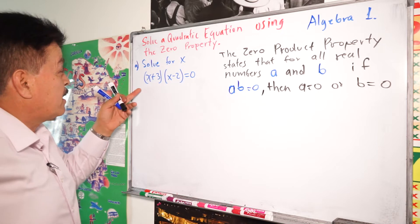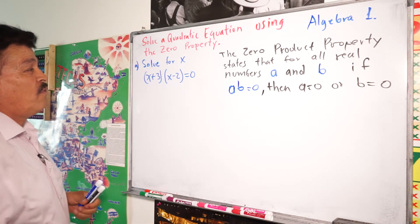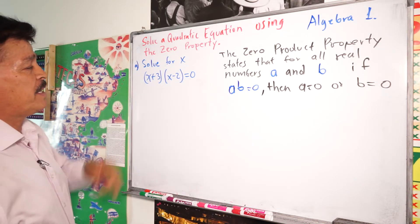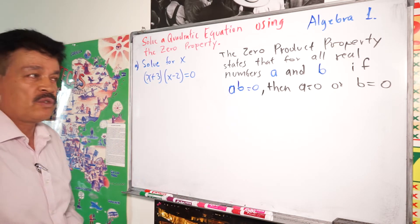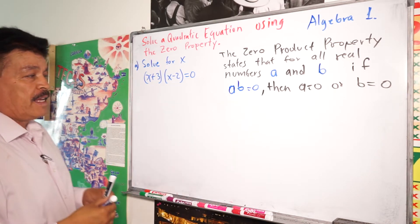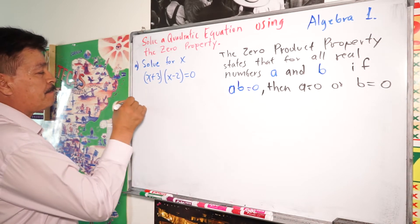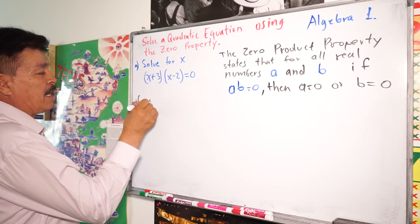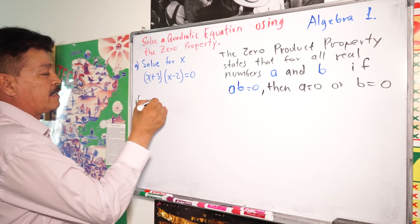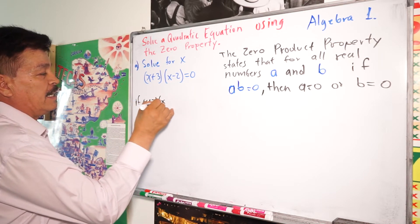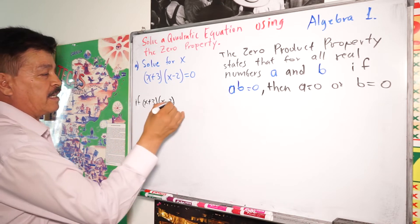We have this example here. Solve for x: (x+3)(x-2) = 0. According to the zero property, if (x+3)(x-2) = 0,